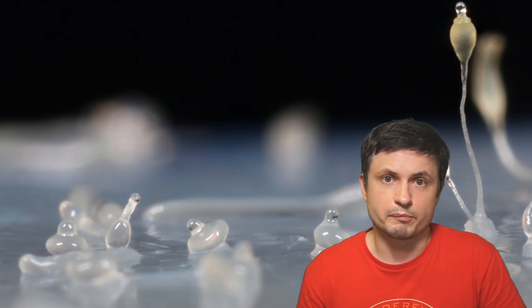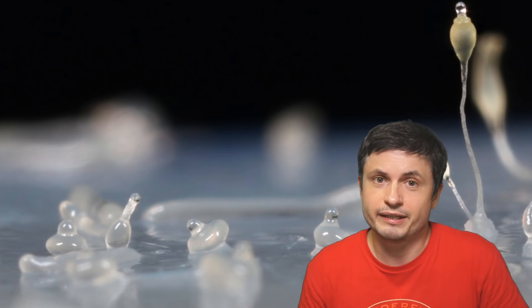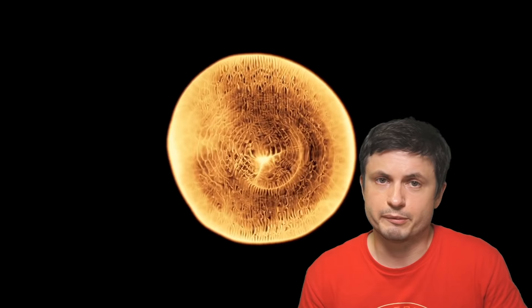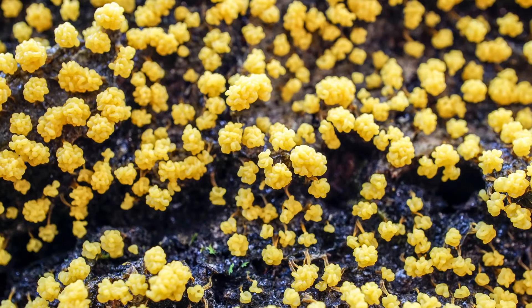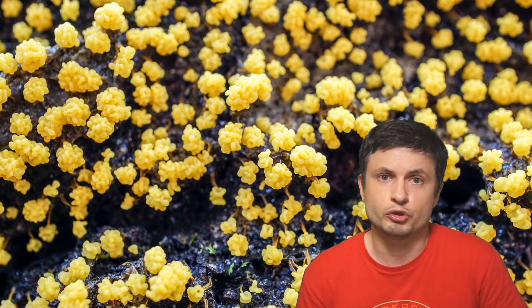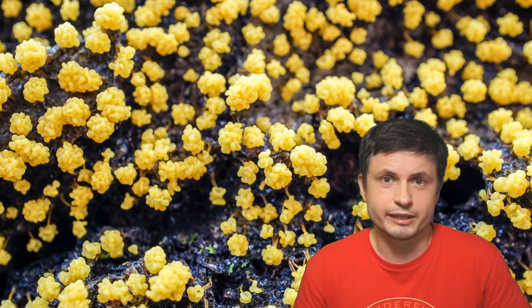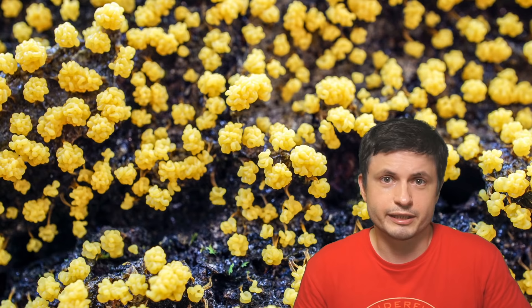But when there's a lot of food in the environment, each of the individual nuclei starts to separate and creates its own tiny cell, its own tiny amoeba. With each of them living their own separate lives until there's no more food left again. And at that point, they once again create this large cell, start to look for food. And if nothing is found, some of these species are even able to create these mushroom-like formations, which generally just sit there waiting for something to pick them up to take them to a new place. And that something could be anything. An animal, a gust of wind, or just something brushing against it.